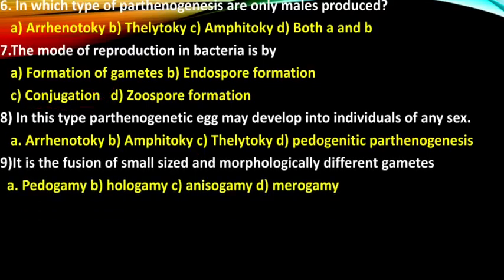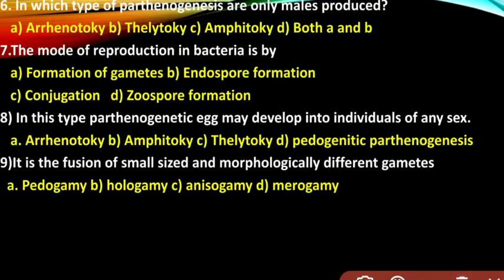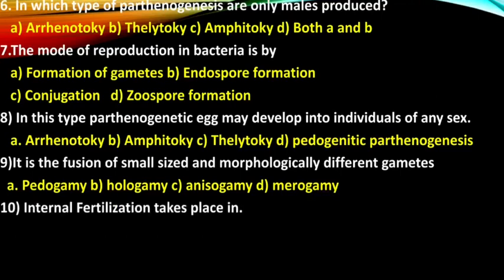Question 9: It is the fusion of small-sized and morphologically different gametes — the answer is Microgametes. Question 10: Internal fertilization takes place in —